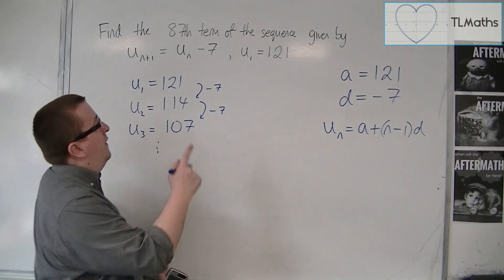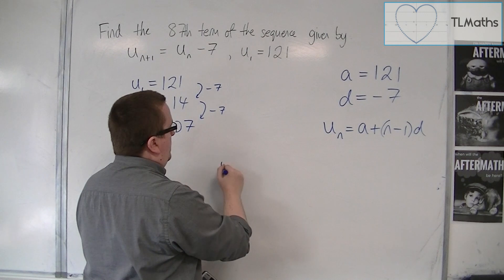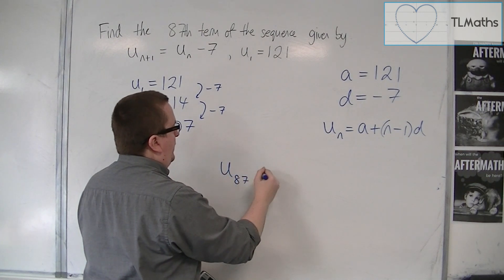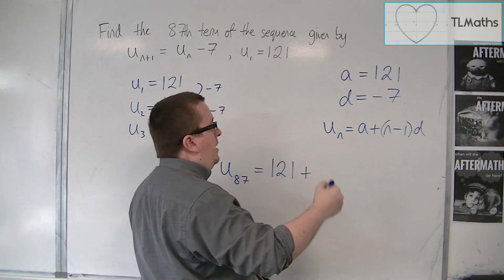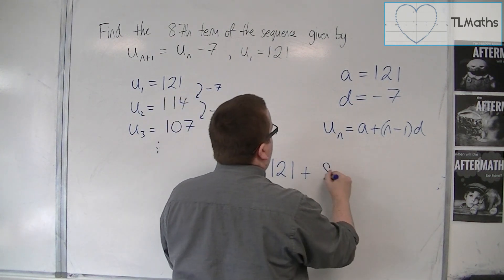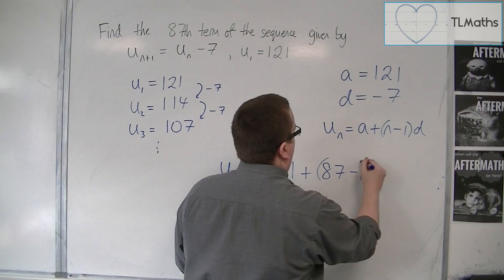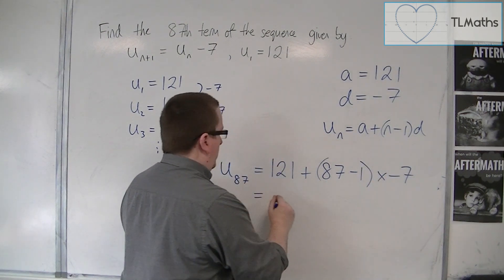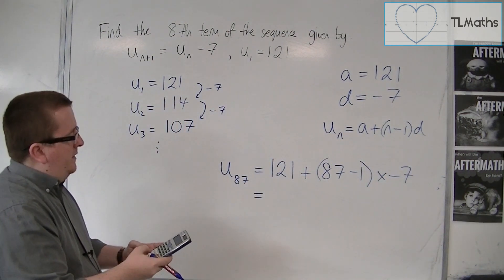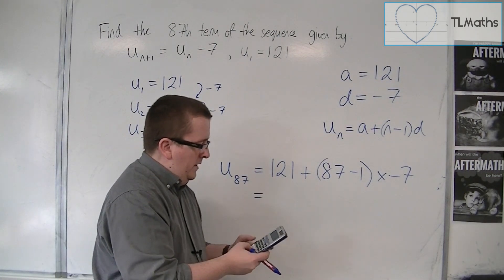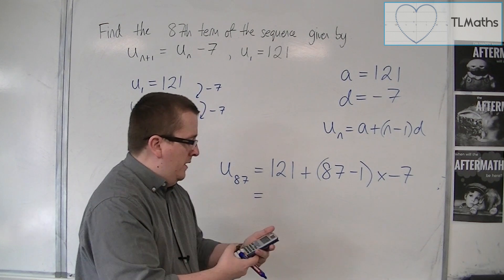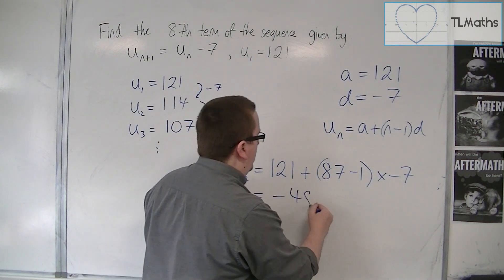If I want the 87th term, the 87th term is a + (n-1) times d, so 87 minus 1 times d. If I put that in the calculator, 121 plus 86 times minus 7, I get minus 481.